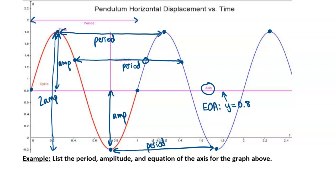Let's list the period, amplitude, and equation of the axis for the graph. The period can be measured from the starting point at zero all the way to one, so the period is one. Assuming the time is in seconds, that's a period of one second.